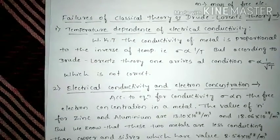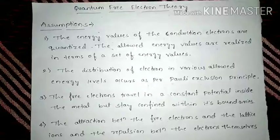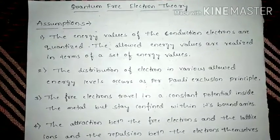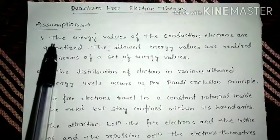Now after these failures, we will move to the next theory, that is quantum free electron theory. So before going to this quantum free electron theory, let us understand or discuss what are the assumptions. So the first assumption is, the energy value of conduction electrons are quantized.